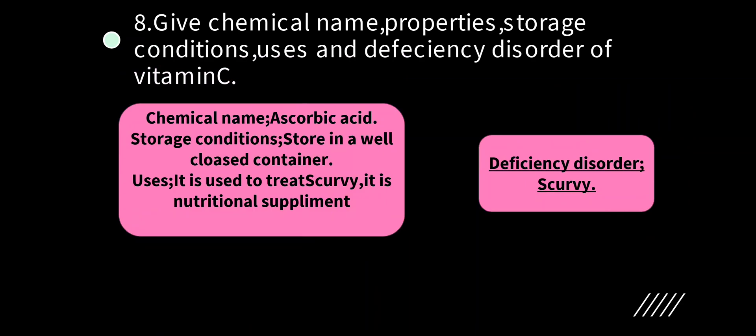Give the chemical name, properties, storage condition, uses, and deficiency disorder of Vitamin C. Vitamin C chemical name: ascorbic acid. Storage condition: store in a well-closed container. Uses: it is used to treat scurvy and as a nutritional supplement. Deficiency disorder: scurvy.